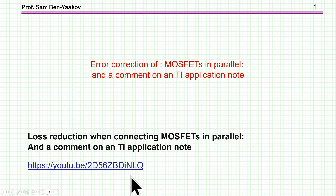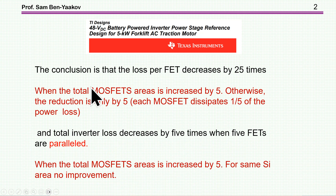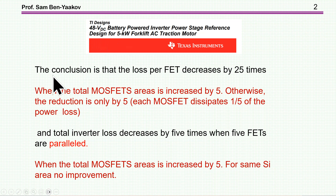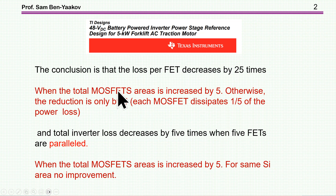This is the link to the original video with the error, and I'm going to print this link in the description section of this video. In the original video, I showed the conclusion of TI in their application note or reference design of a 48V battery power inverter, where they state that the loss per FET decreases by 25 times.